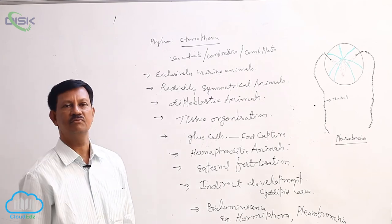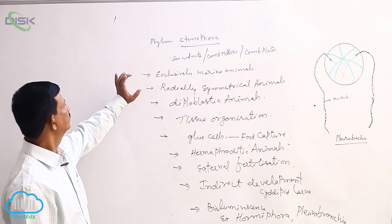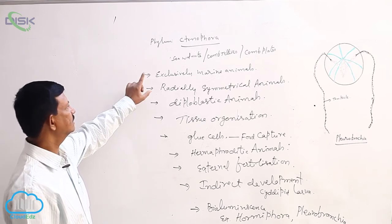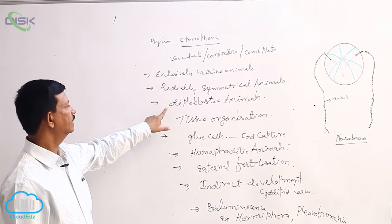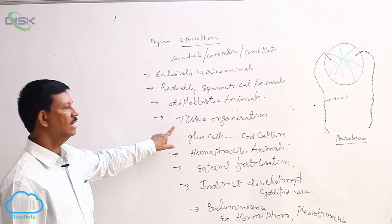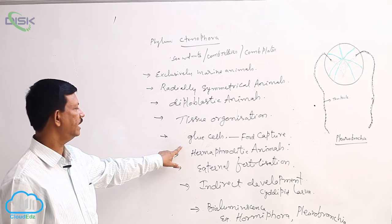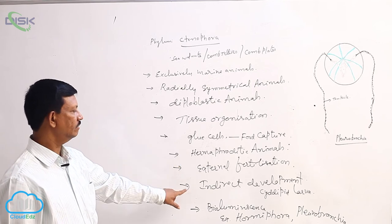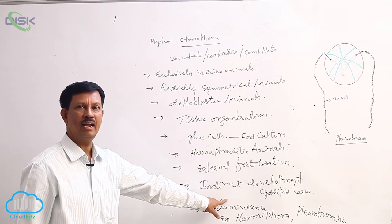These are the important characters of Phylum Tenophora. We have to recollect some characters: they are exclusively marine animals, radially symmetrical diploblastic animals, and the presence of tissue grade of organisms. Special type of cells known as glue cells are present, useful for food capturing. Development includes the larva known as citipede larva, and another important character is the presence of bioluminescence.